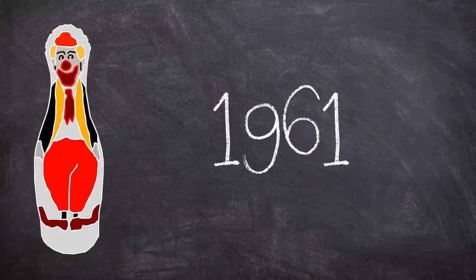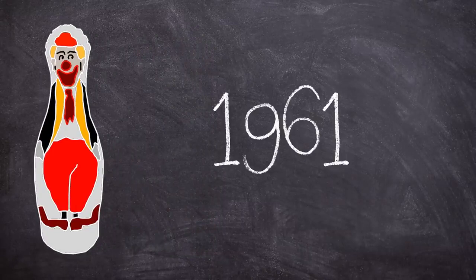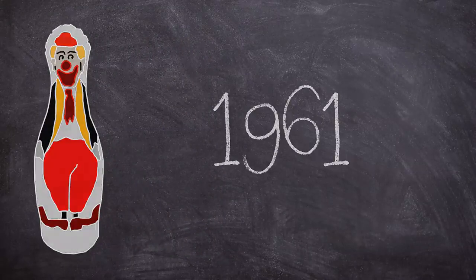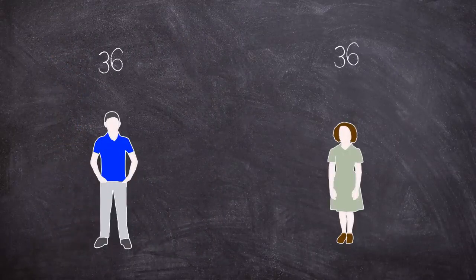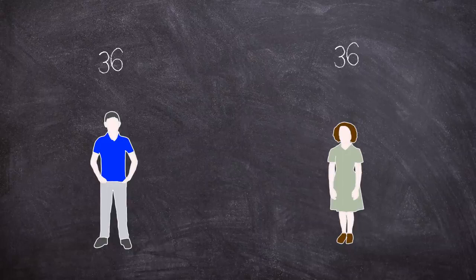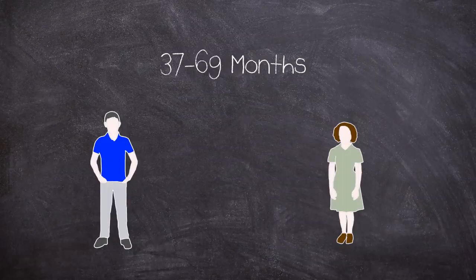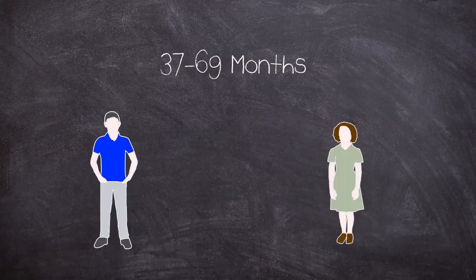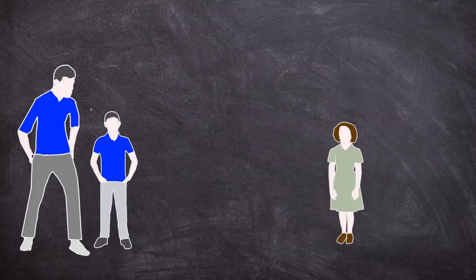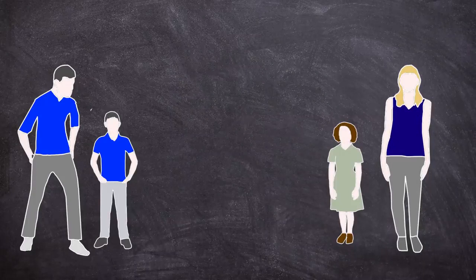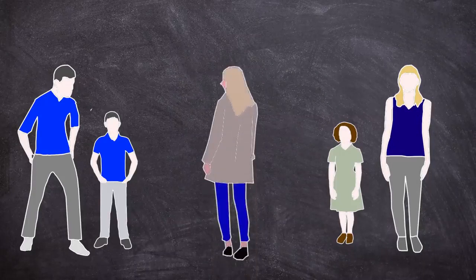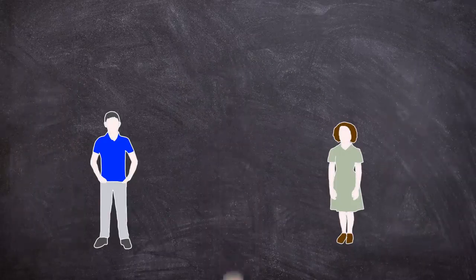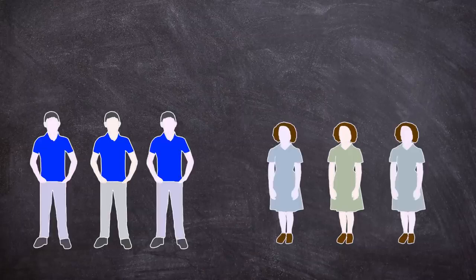The Bobo doll experiment would start in 1961 but first let's look at the method that Bandura set out. The study involved 36 boys and 36 girls who had been enrolled in the Stanford university nursery school. They ranged from the age of 37 to 69 months with a mean age of 52 months. Two adults, a male and a female served in the role of model and one female experimenter conducted the study for all 72 children.